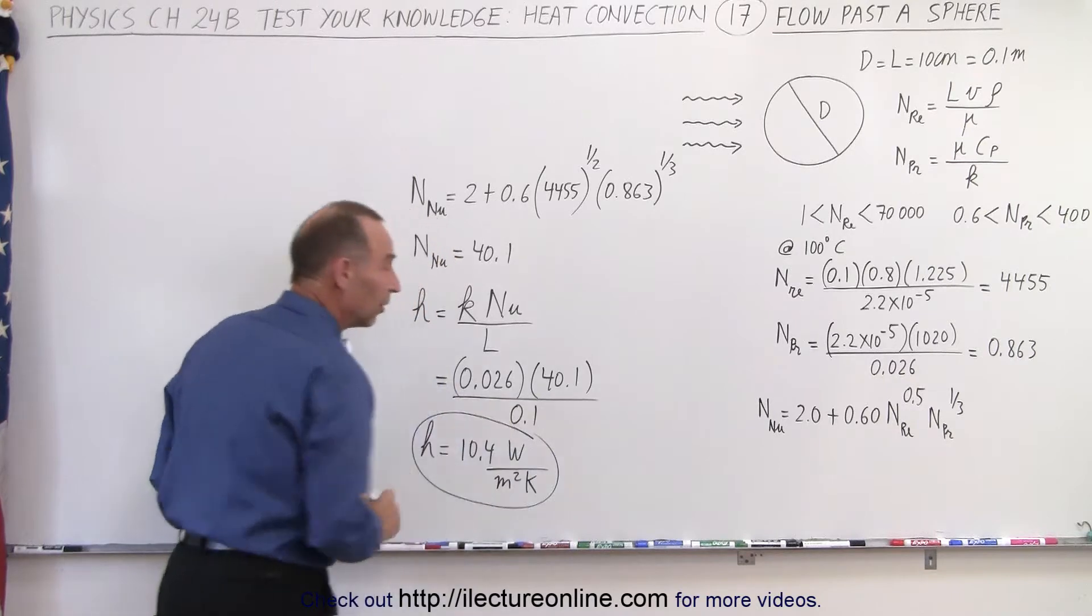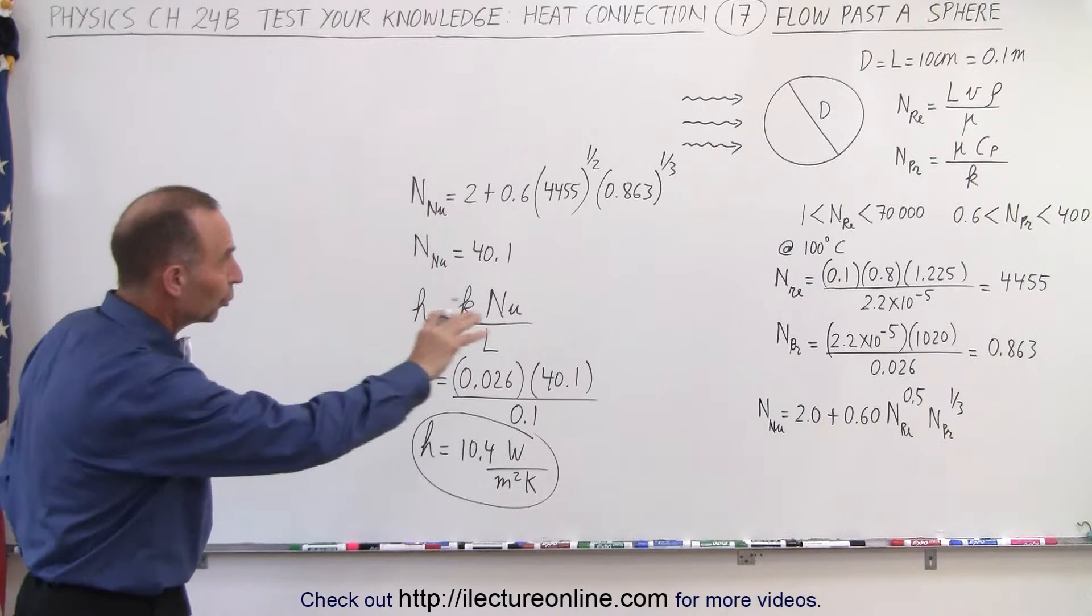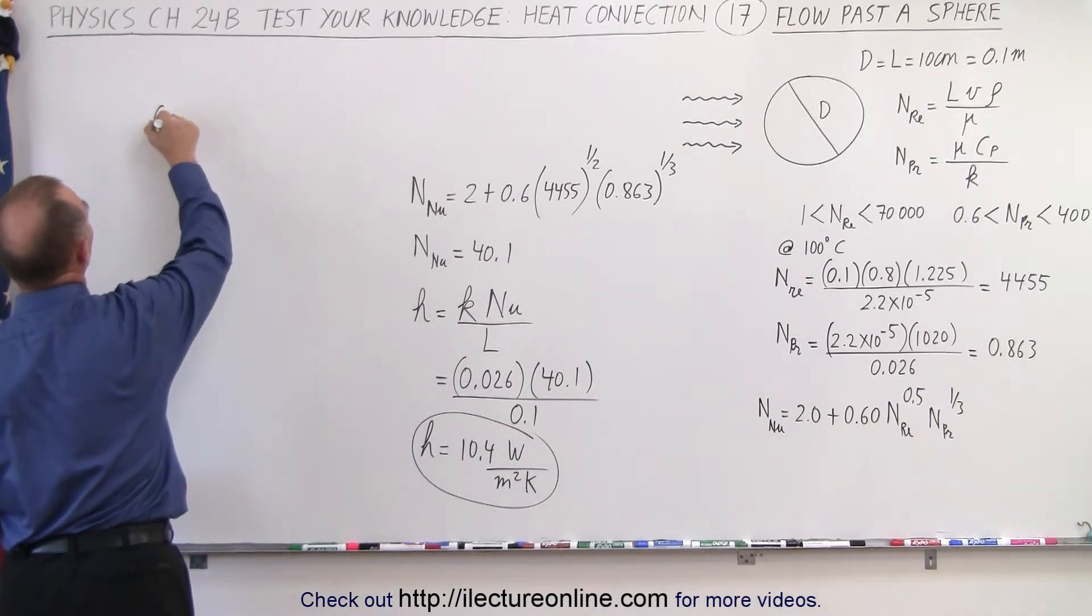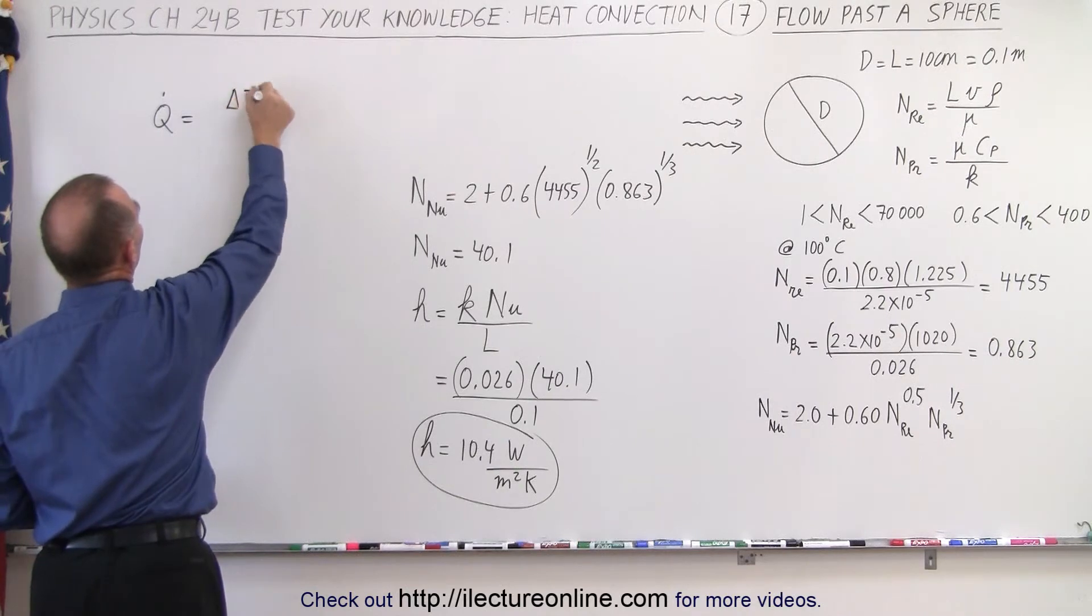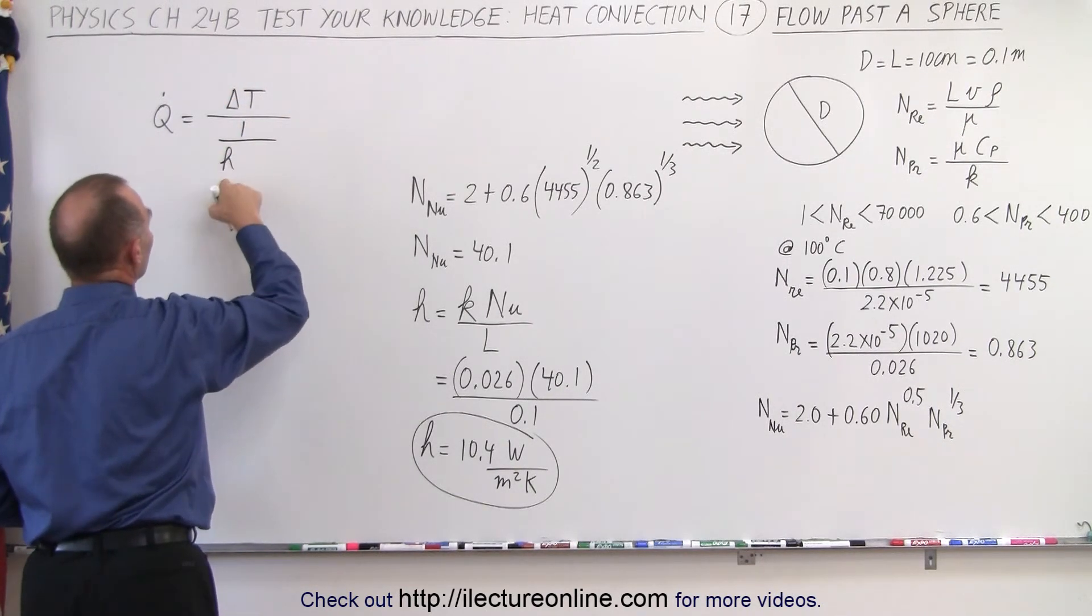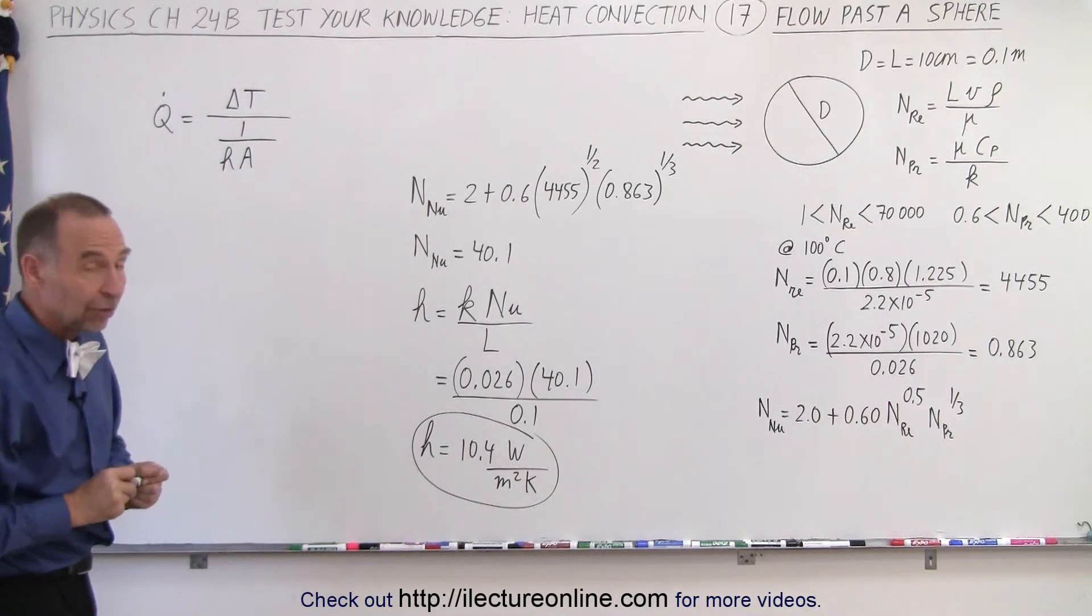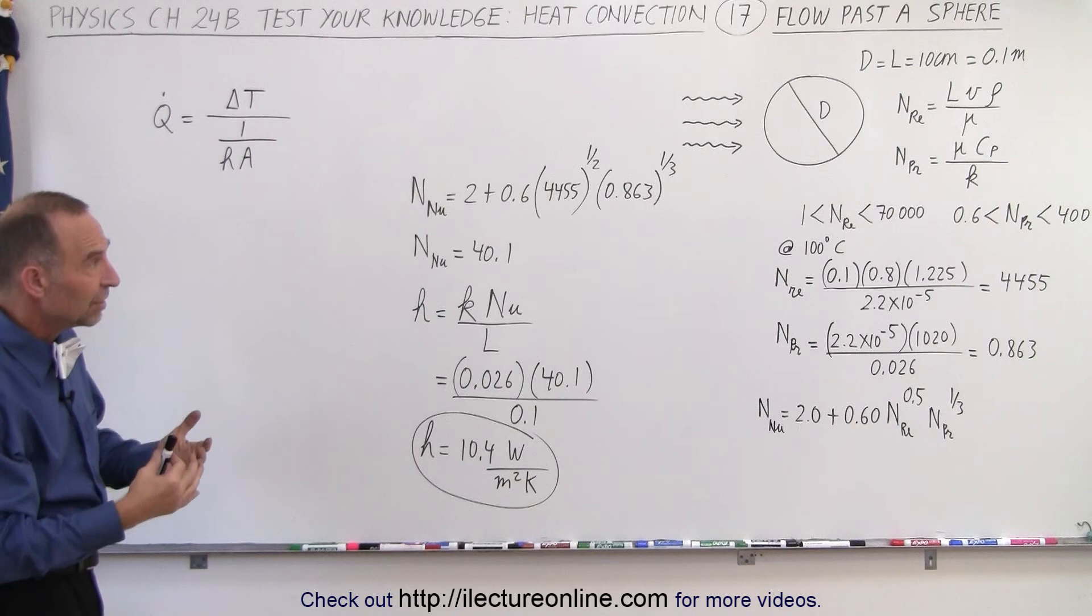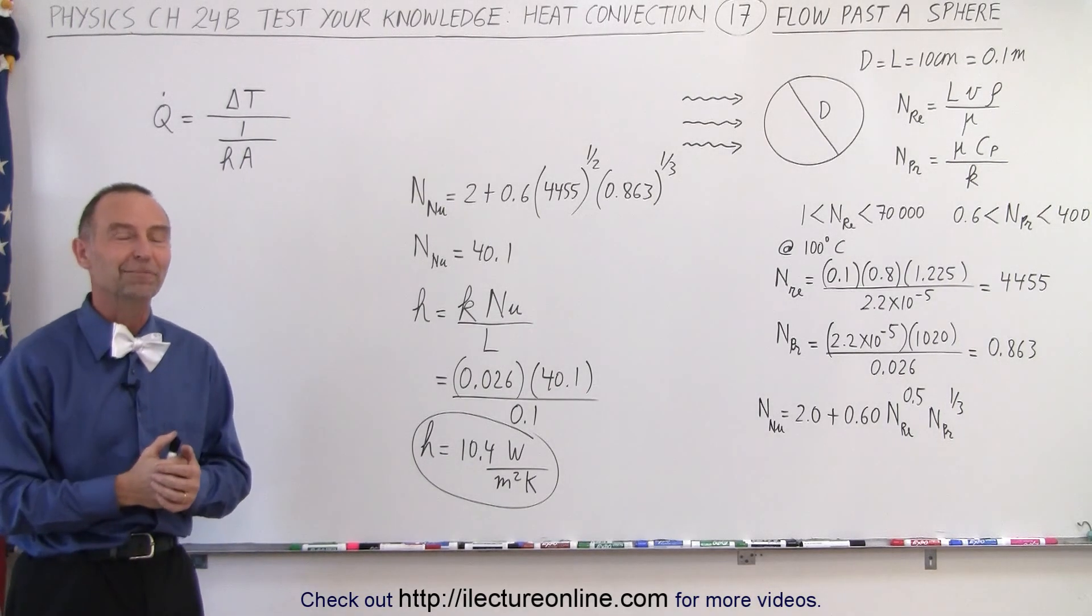And then of course once we want to calculate how much heat dissipates from a warm sphere, so you put cool air across the sphere, we can then say that q dot will be equal to the difference in the temperature divided by 1 over the transmission coefficient times the surface area of the sphere. And so that's how we find how much heat is extracted from the sphere when you blow air across the sphere. And that is how it's done.